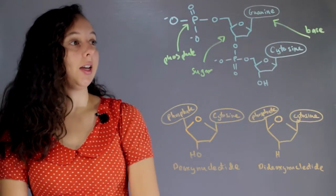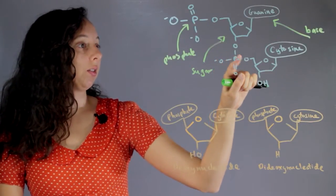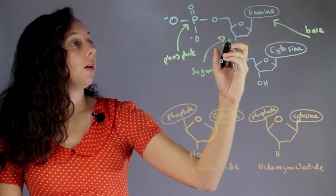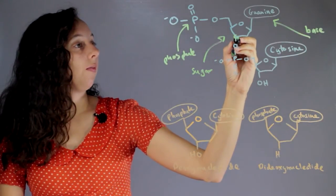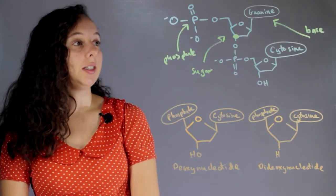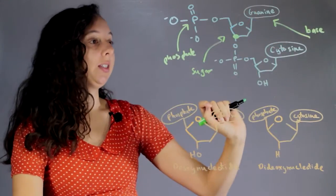It connects to form a single strand right here, and this is called the phosphate backbone. The important thing to look for is this little location on the sugar. You can see that this is our one unit: phosphate, sugar, and base.